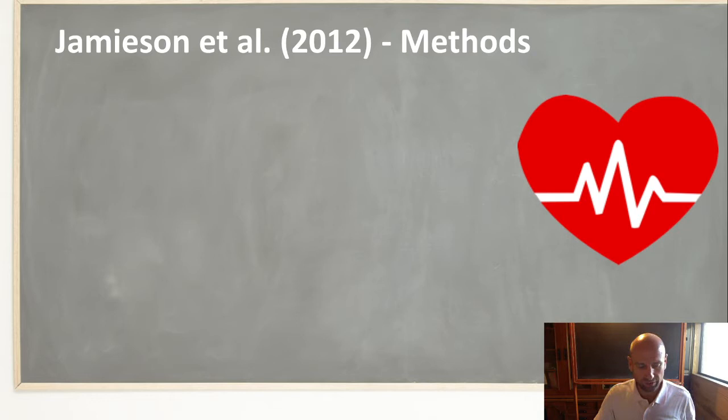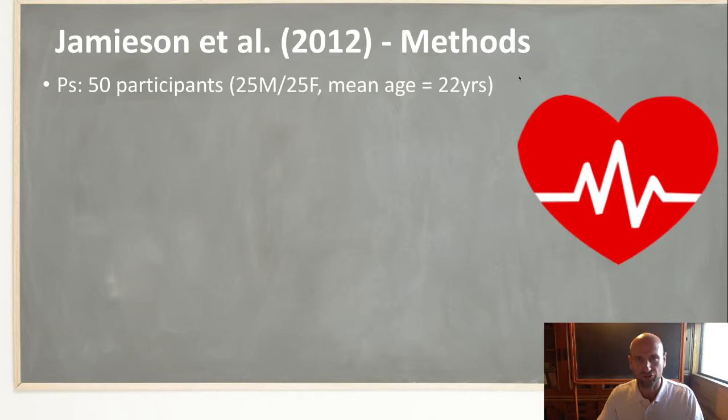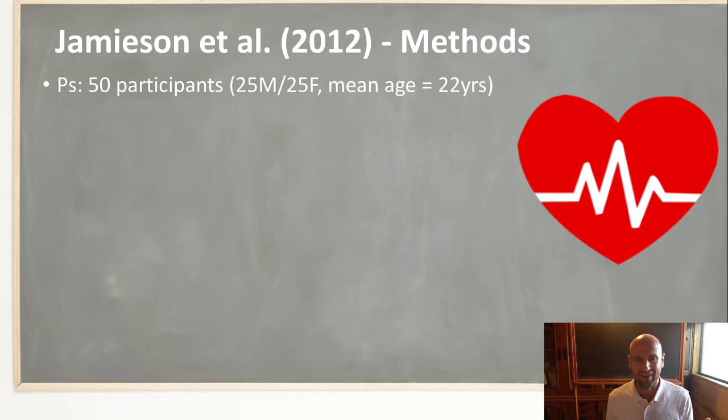We've got the key study here: Jameson et al. in 2012. They did a study involving the TSST — the Trier Social Stress Test. To recap this test: participants come into a room, they're given five minutes to prepare a speech. It's usually a job interview scenario — they're told they're going to apply for their dream job and told to explain why they should get it.